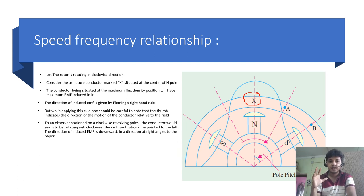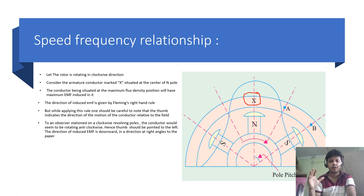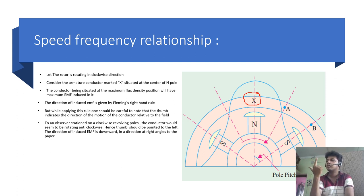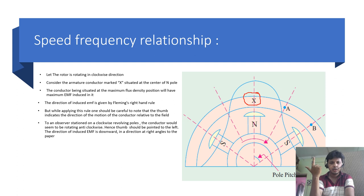To an observer stationed on the clockwise revolving pole, the conductor would seem to be rotating anti-clockwise, so the thumb should be pointed to the left. If we put the direction of the field by the index finger, the middle finger indicates the direction of the induced EMF. The direction of the induced EMF is downward, in the direction right-angle to the paper.